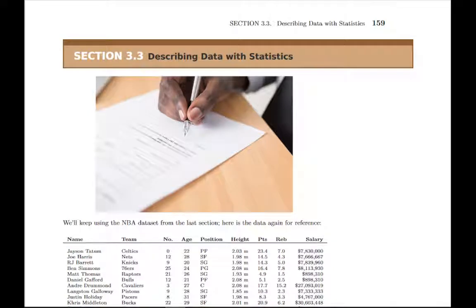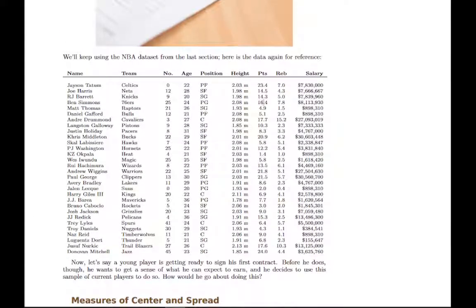In section 3.2 we saw how to describe data visually with graphs, charts, and tables. In section 3.3 we'll see how to describe a data set using statistics, which are numbers that describe something about the data set. I start the section using the MBA data set from the last section again, and we'll draw examples from here as we go through the section.